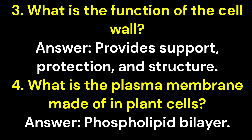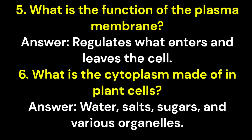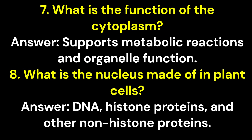4. What is the plasma membrane made of in plant cells? Answer: Phospholipid bilayer. 5. What is the function of the plasma membrane? Answer: Regulates what enters and leaves the cell. 6. What is the cytoplasm made of in plant cells? Answer: Water, salts, sugars, and various organelles. 7. What is the function of the cytoplasm? Answer: Supports metabolic reactions and organelle function.